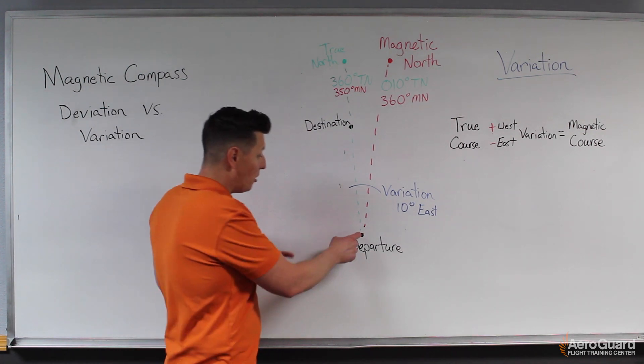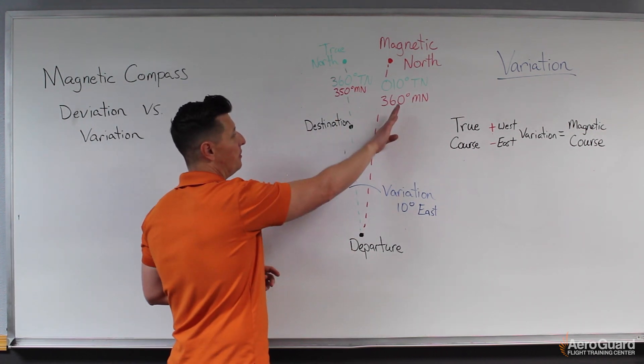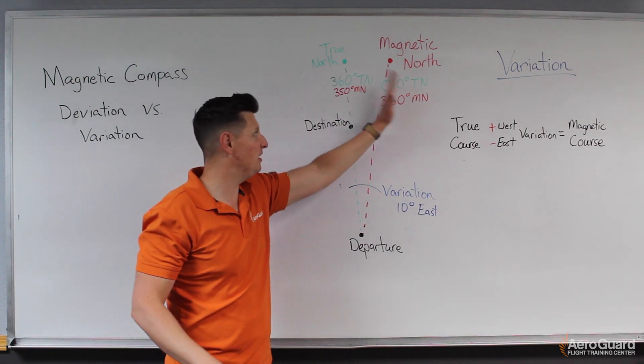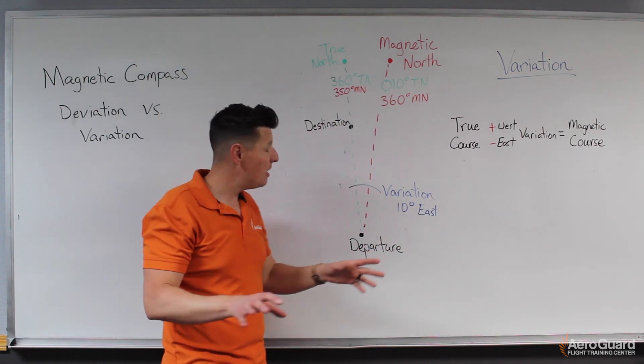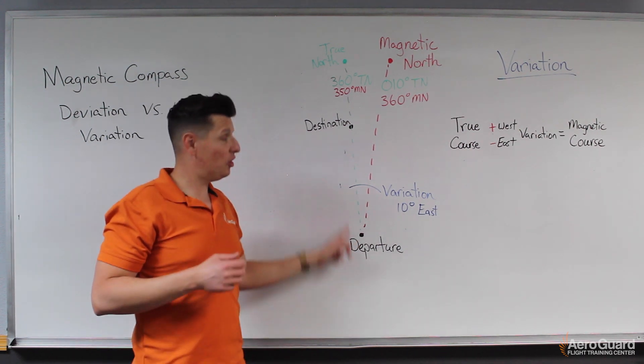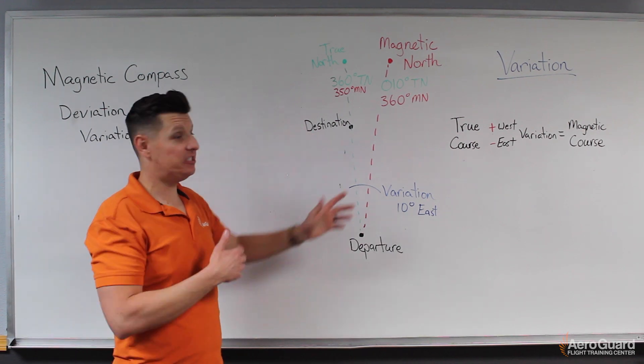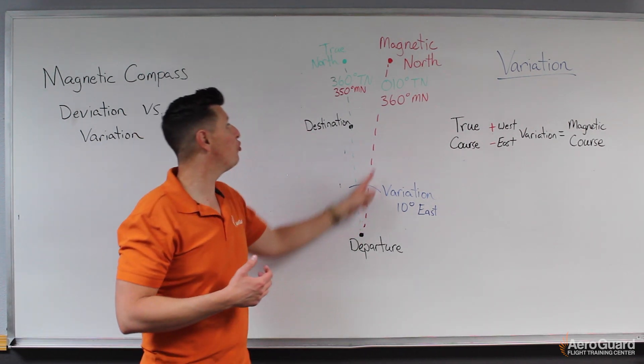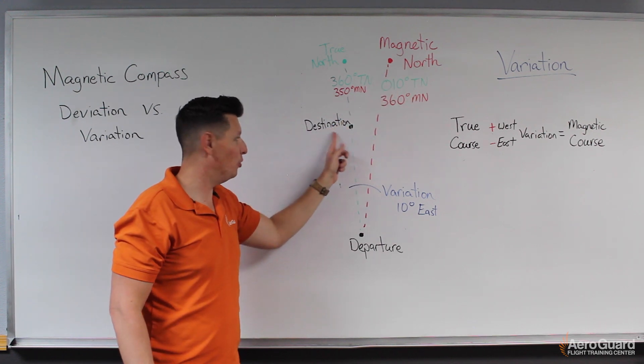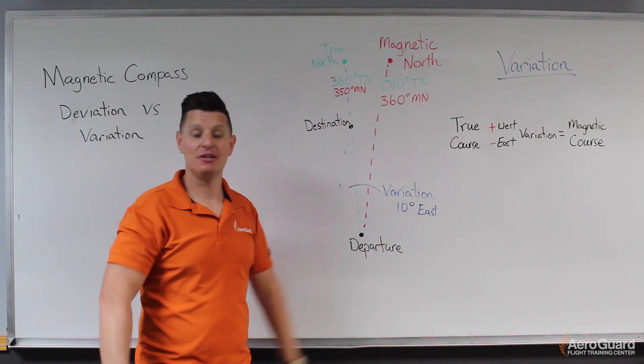But from our same perspective on this course, magnetic north in this case is kind of over here to the right or slightly to the east, which means if in this example, we got into the airplane, we took off, and we pointed the nose at 3-6-0 degrees, we would go towards magnetic north over here, which obviously would not take us to our destination, but would take us somewhere else.